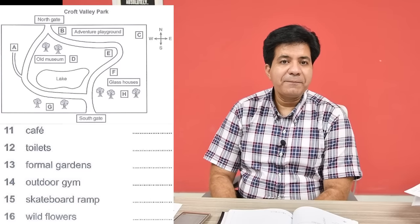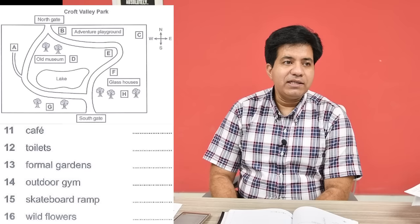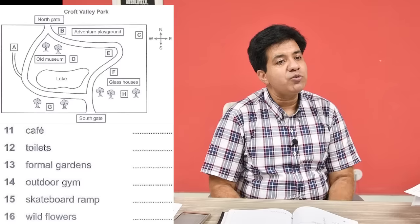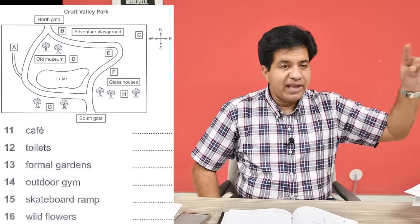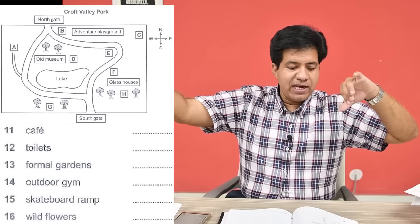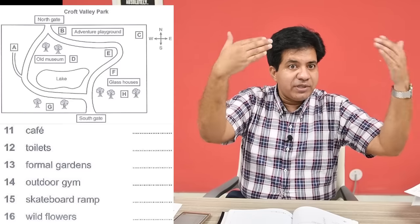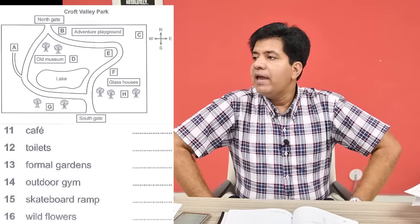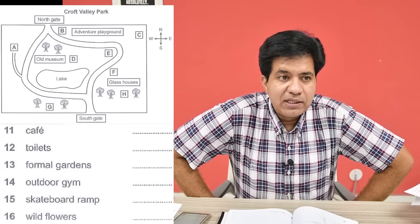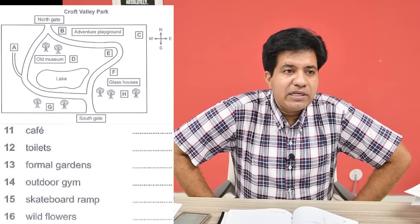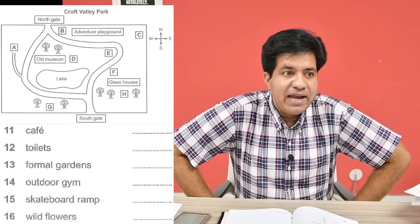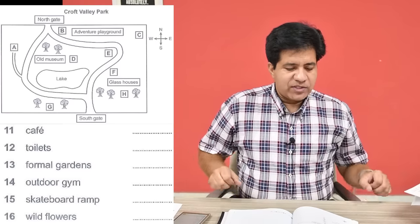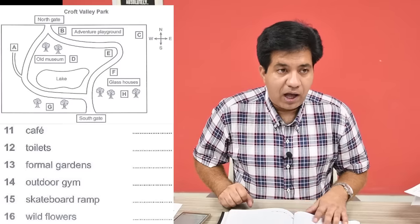Looking out over the lake and next to the old museum — D for doctor or E for elephant? Next to the old museum means close to that, and looking out at the lake means from there you can see the lake. So D is the right answer and you will write capital D. In IELTS listening and reading, use capital letters — they are better.